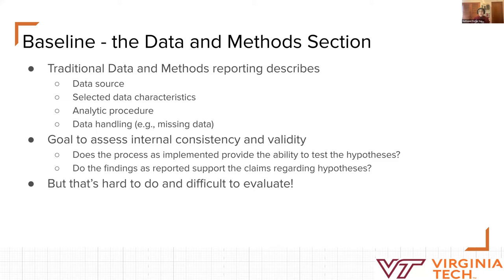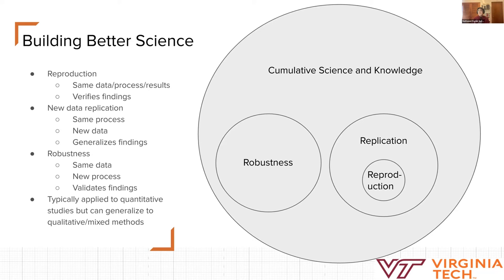It also covers how you handled things like missing data. The ostensible goal is to assess the internal consistency and validity — that is, does the process test the hypothesis, and do the findings support the claims about the hypothesis? But it's hard. So how do we build a better science?